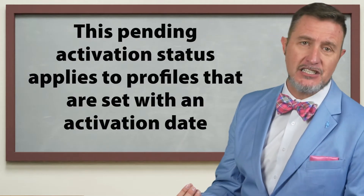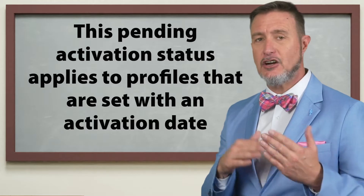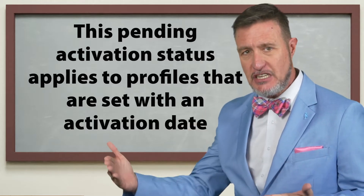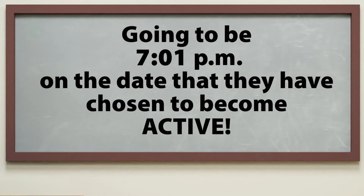The pending activation status applies to profiles that are set with an activation date. The participant and the Federal Reserve Bank can edit the profile before that date, but no messages are sent or received. This status continues until the FedNow Service cycle day rolls over to that effective date, which is typically 7:01 PM on the date they have chosen to become active.